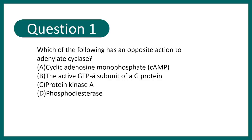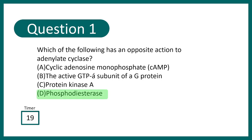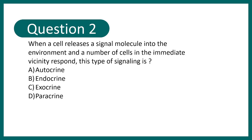Question 1: Which of the following has an opposite action to adenylate cyclase? Options: cyclic AMP, active GTP alpha subunit of G protein, protein kinase A, or phosphodiesterase. The correct answer is phosphodiesterase, because phosphodiesterase has the opposite effect — it breaks down cyclic AMP. Click the 'i' button to learn more.